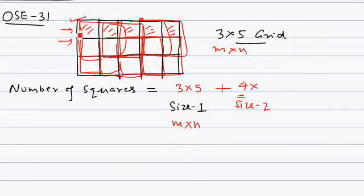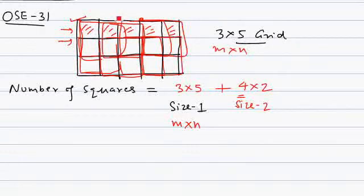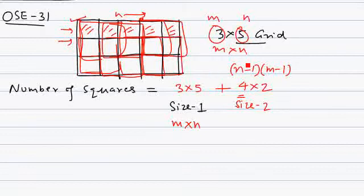When you move horizontally, we have four squares, and this repeats only two times, giving eight size-2 squares. If we generalize — m is 3, n is 5 — in the n direction it is n minus 1, that is 4, and m minus 1, that is 2. We count one less because we're starting from one line and going till one before the last. Similarly going down.